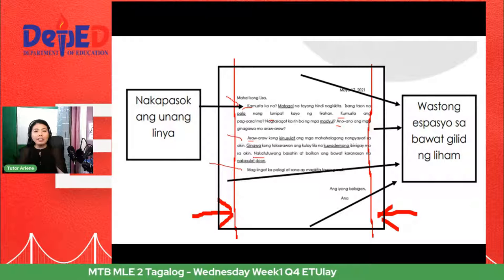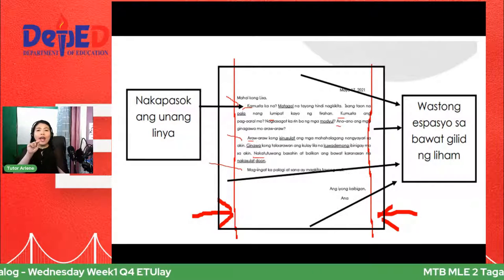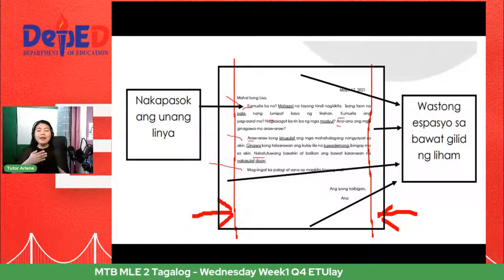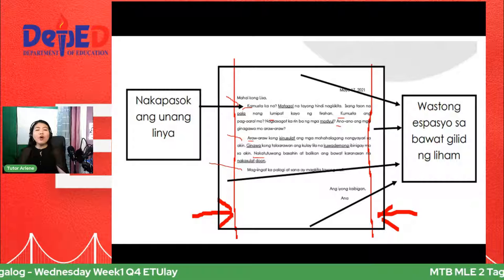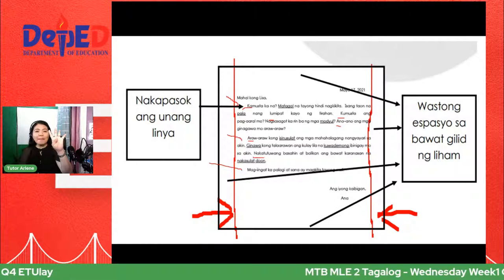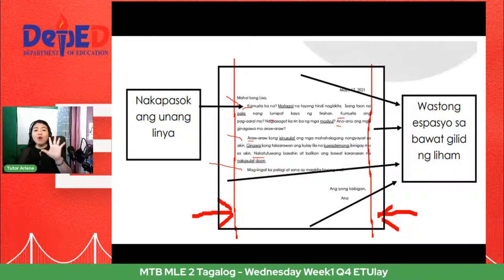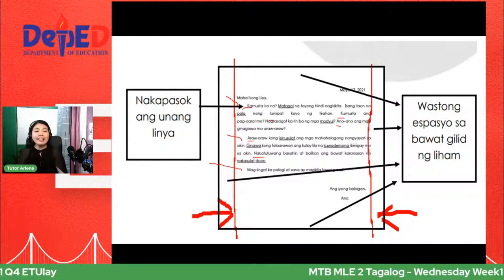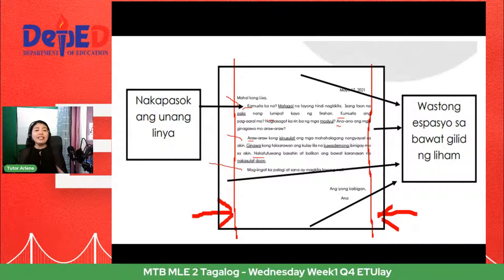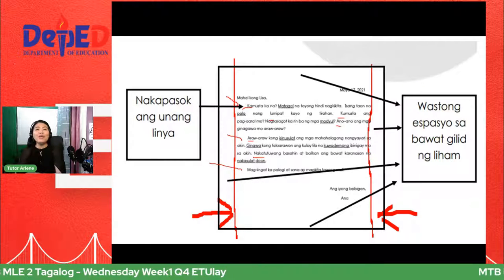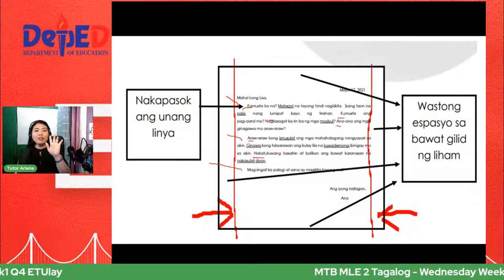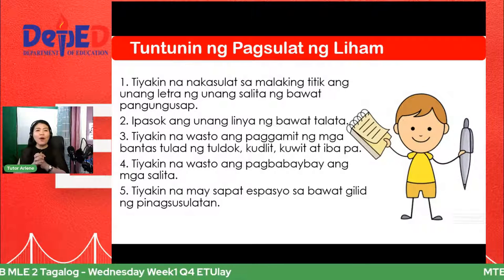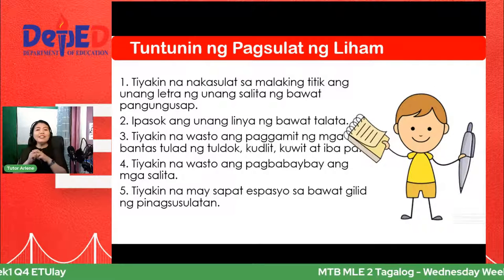Ika-lima: tiyakin na wasto ang pagbabaybay ng mga salita — yung pagkakasunod-sunod ng mga letters o spelling. At ika-anim: tiyakin na may sapat na espasyo sa bawat gilid. Yun na nga yun — una ko pa lang nasabi yun. Lima yung ating dapat tandaan. Maaari ninyo itong i-screenshot, mga anak, para matandaan ninyo. Kasi iba yung nakikita natin kaysa dun sa nasa isip lang — maaaring malimutan natin ito, kaya mas maganda isulat natin.